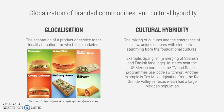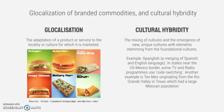Glocalization is the adaptation of a product or service to the locality or culture for which it is marketed. From this diagram we can see that McDonald's, for example, has all these different products which are marketed towards specific cultures and cuisines. Similarly, IKEA's catalogues — they make hundreds of millions of copies — however they diversify their copies according to the culture in which they are being provided to.